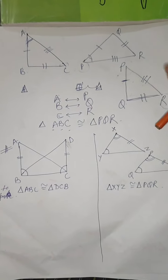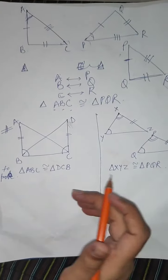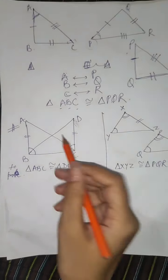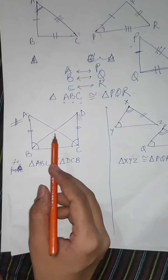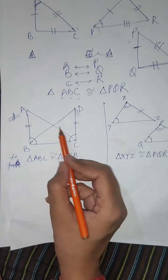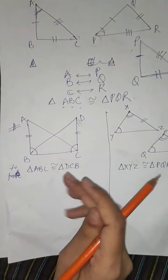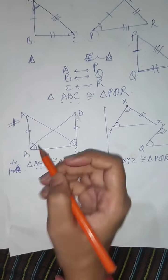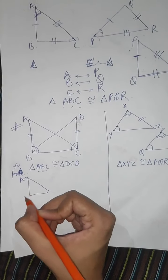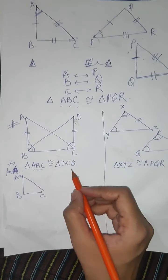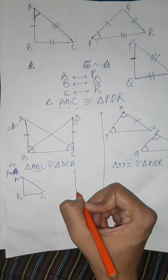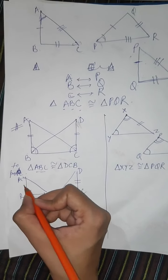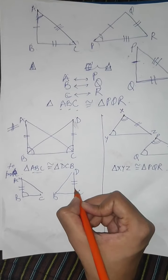Now let's do some proof questions where we are given some things and we have to prove two triangles congruent. I have to prove triangle ABC congruent to triangle DCB. There are two different triangles here. As I told in the previous class, when both triangles are drawn together like this it is a little confusing, so what we will do is separate the two triangles. First looking at ABC, I have drawn it separately. The second triangle DCB I have drawn separately on the other side.